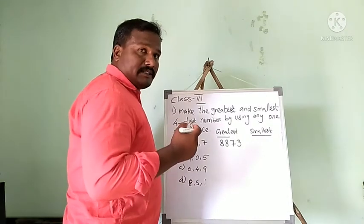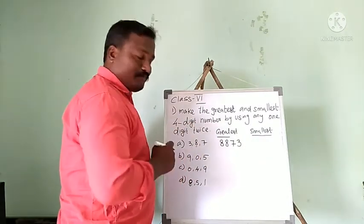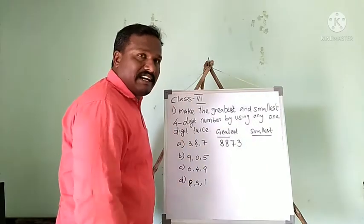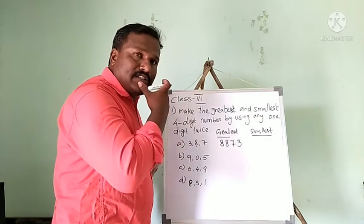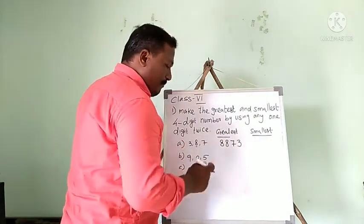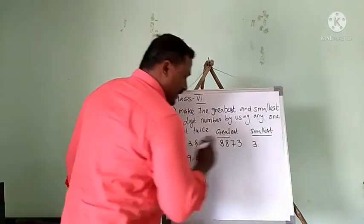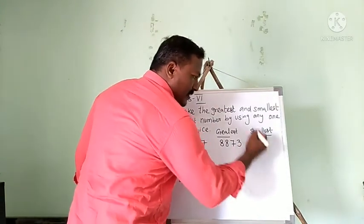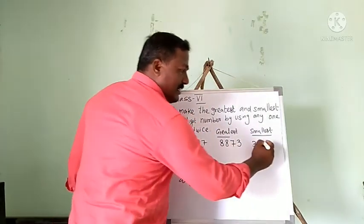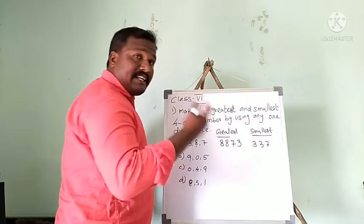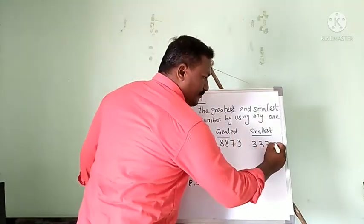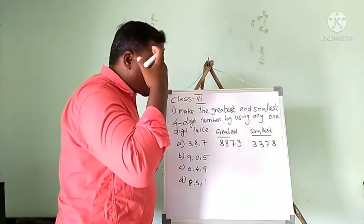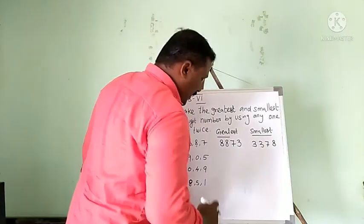Now we make the smallest number from 3, 8, 7. For the smallest number, write in ascending order — smallest digit first. Three is the smallest, so we write 3 two times, then the next bigger number 7, then the biggest number 8. So 3378 is the smallest four-digit number. I hope you understand.